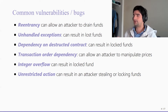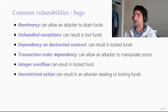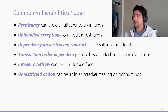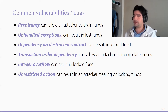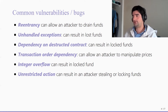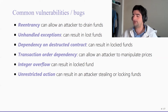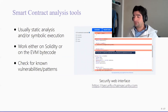Transaction order dependency might allow an attacker to manipulate prices, enable front-running, and similar attacks. Integer overflow happens quite often in the Ethereum context simply because overflows are not checked by the EVM and can silently pass through, resulting in various problems depending on what exactly happened. Finally, unrestricted access is more of a permission problem where an attacker might be able to steal funds or destroy a contract without being explicitly allowed to.